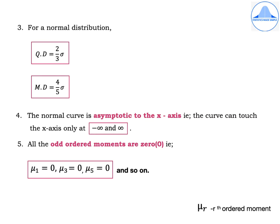Property 4: The normal curve is asymptotic to the x-axis. This means the curve can touch the x-axis only at minus infinity and infinity. Since minus infinity and infinity are imaginary values which can never be reached, there is always a gap between the curve and the x-axis in any real drawing.